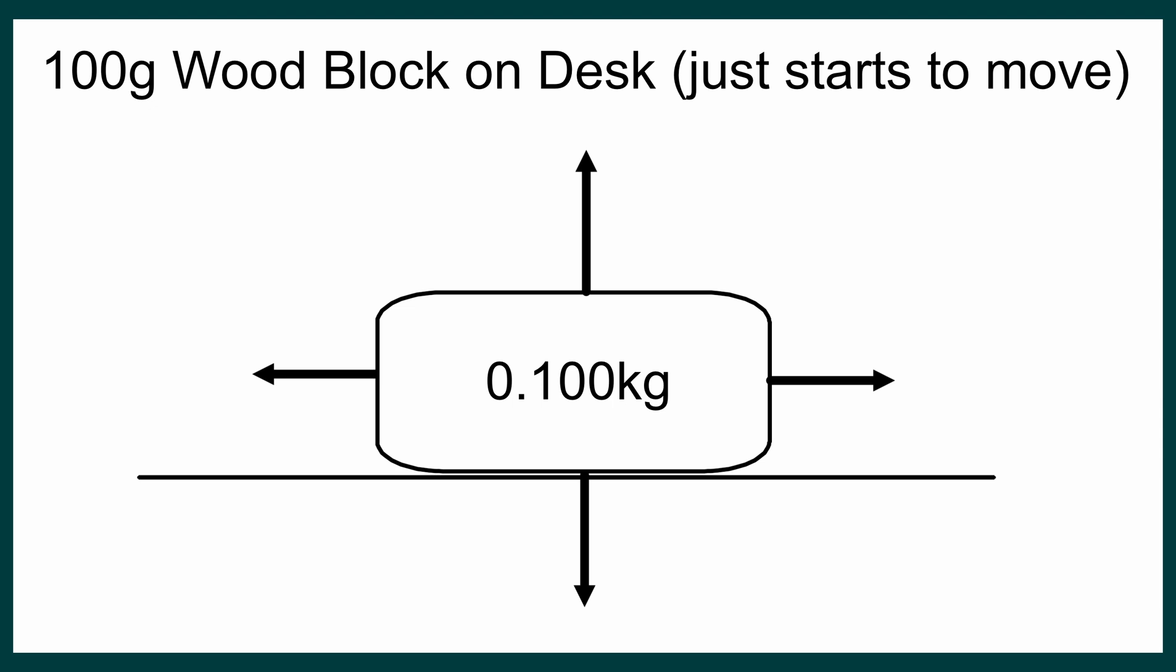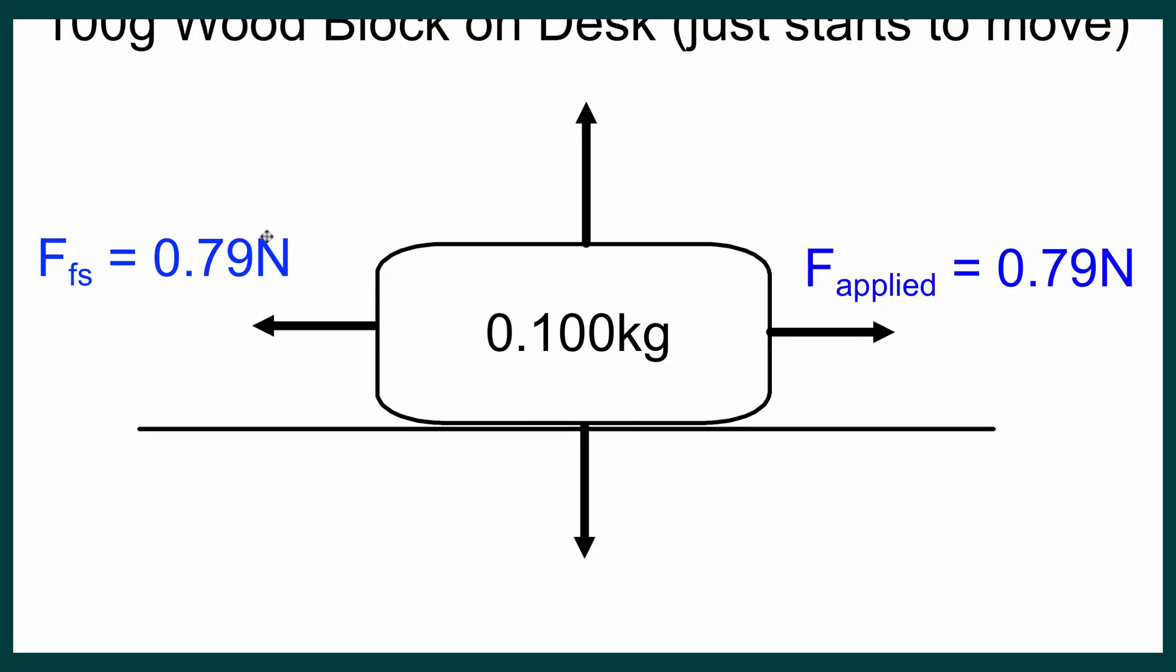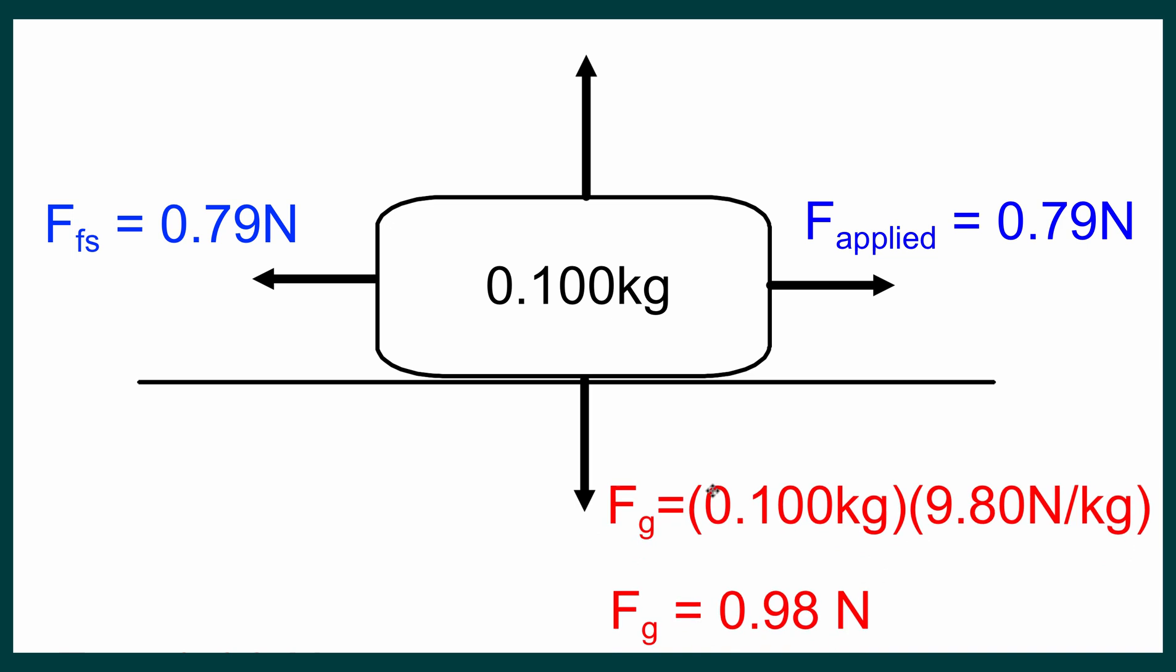Now to move on to the free body diagrams and the calculation for the coefficients of friction. I've got my diagram labeled 100 gram wooden block on desk. This is when it just starts to move. Now what I'm going to do is add in the forces. So there was an applied force of 0.79 Newtons. If you're pulling with 0.79 Newtons and the block just starts to move, our frictional force was also 0.79. Now we're going to put in gravity and the normal. Gravity is mass times g, which is 9.8 Newtons per kilogram, giving us a value of 0.98 Newtons. And because this is sitting on a level tabletop with no acceleration up or down, we know the normal force is also 0.98 Newtons. So here's the pull. There's the frictional force static in the opposite direction until it just starts to move. Gravity 0.98 and the normal, which is also 0.98.